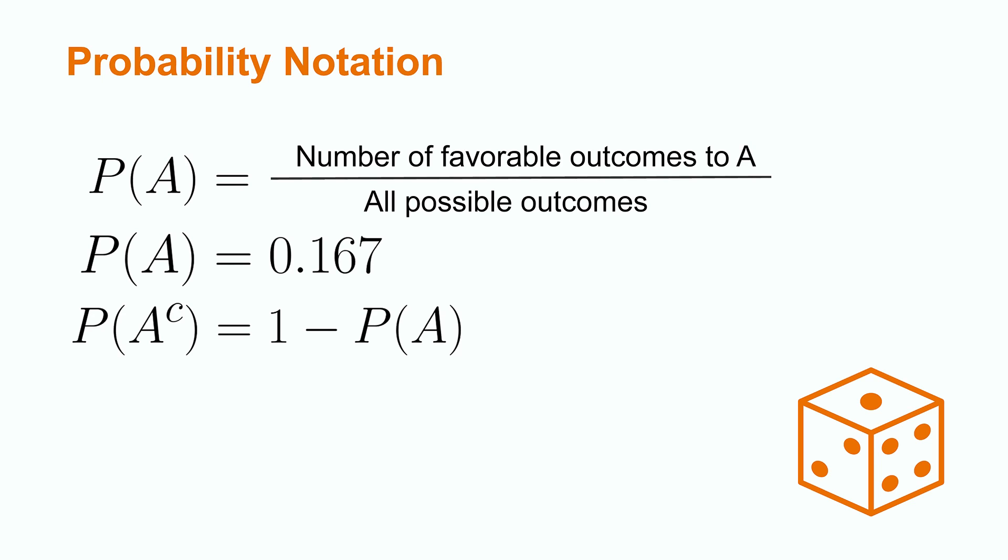In our die example, P of A complement would represent the probability of rolling anything besides a 3, or rather the probability of rolling a 1, 2, 4, 5, or 6.